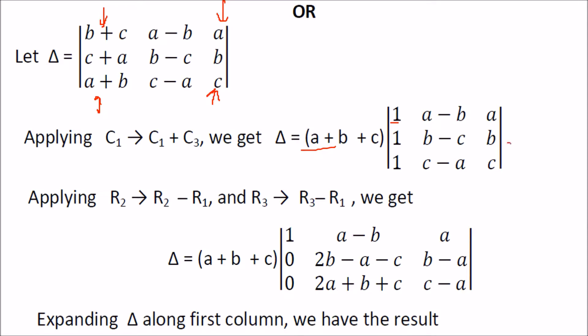Then apply row operations: R2 becomes R2 minus R1, and R3 becomes R3 minus R1. You get the simplified determinant, solve it and multiply with a plus b plus c to get the desired result.